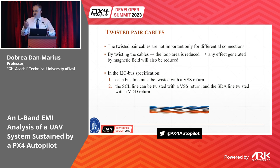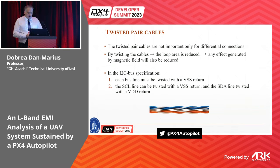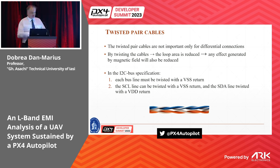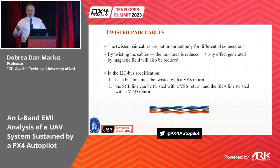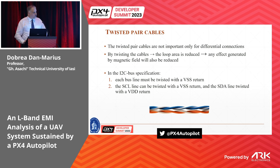You can also use twisted pair cables as another solution. This approach is widely used in differential systems, but even without differential communication, it reduces your loop area. Any effect generated by variable magnetic fields is also reduced. In the case when you use I2C buses connected between two systems using twisted pair cables, there are specific recommendations in the official documentation.